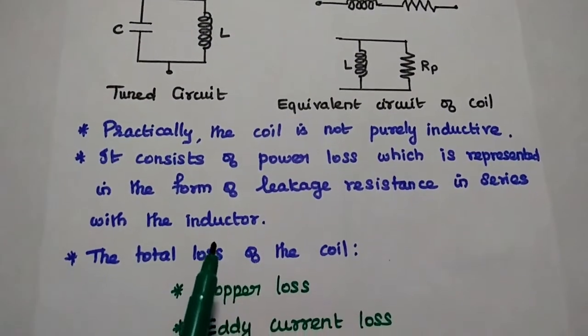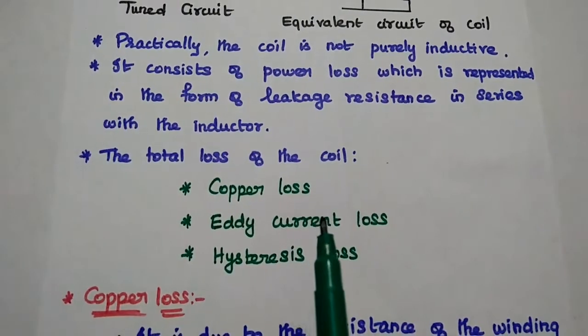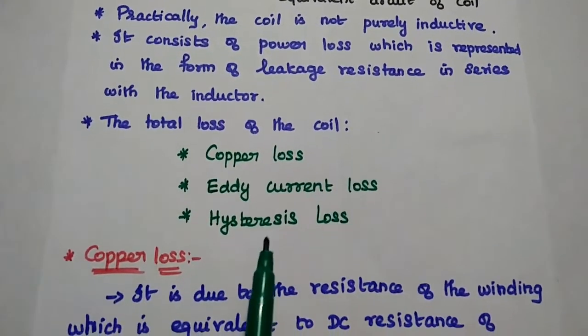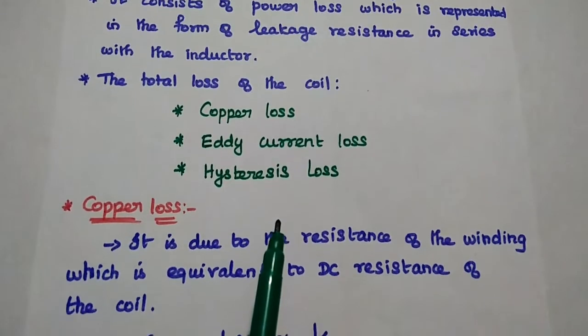So here the total loss can be comprised of three types: copper loss, eddy current loss, and hysteresis loss. So let's discuss each type in detail here.